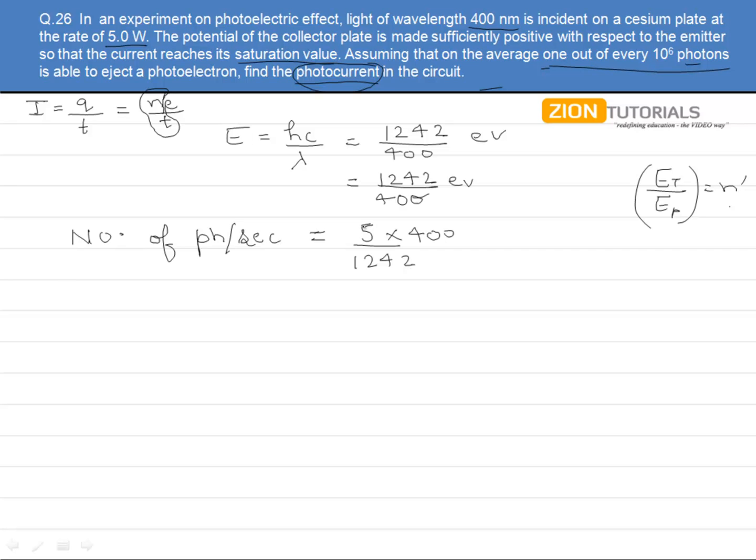But this power was in watts, but this was in electron volts. So I need to convert this into joules only because joule per second is watts. So I need to convert this into joules so that this joules gets cancelled. For that, I need to divide it by 1.6 × 10^-19.